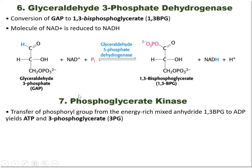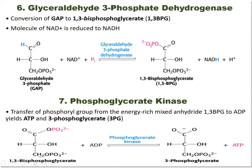Step 7 is catalyzed by phosphoglycerate kinase. Here, 1,3-bisphosphoglycerate is converted into 3-phosphoglycerate. One phosphate from 1,3-bisphosphoglycerate is transferred to ADP, so dephosphorylation occurs and as a result 3-phosphoglycerate and ATP are produced.